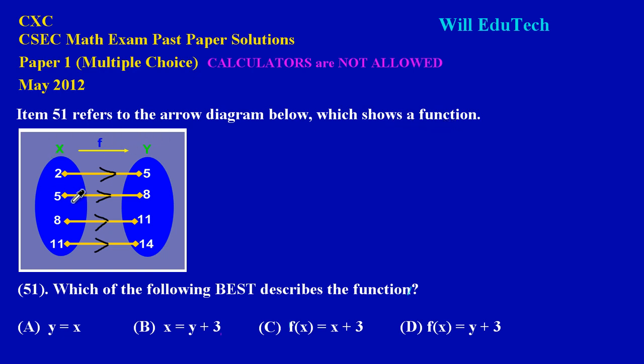Here we have our diagram. To my extreme left I have my x values, my domain values, which is mapping onto my y values, and these y values are called the range values. Now if you notice carefully, this is a one-to-one function. For example, I have one x value mapping onto one y value, and the arrowhead shows you the direction that mapping is taking place.